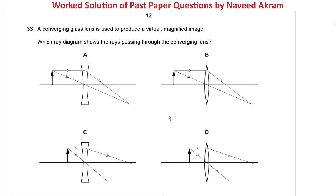The next question is number 33 from May/June 2020 paper 1 variant 2: a converging glass lens is used to produce a virtual magnified image. Which ray diagram shows the rays passing through the converging lens? The keywords are: converging lens, virtual image, and magnified image — use these to find the answer.